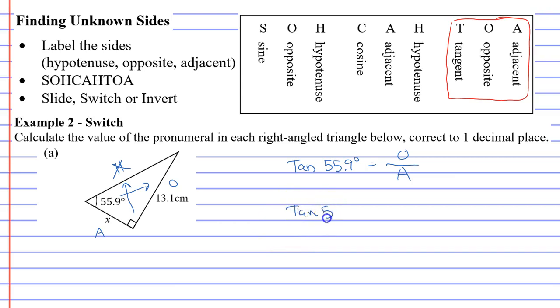All right, so we're going to replace the O and the A. The O will be replaced with 13.1. And the A will be replaced with the pronumeral X. All right, now when you get a pronumeral for the denominator at the bottom of the fraction, then you do what's called a switch. And switch means we're going to switch the X with the tan 55.9. So the X is going to come on the left side. And the tan 55.9 will go below on the fraction.